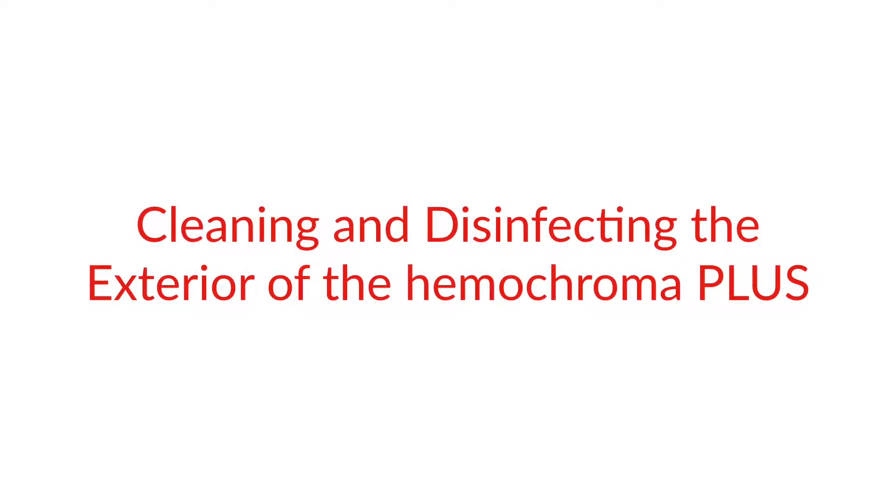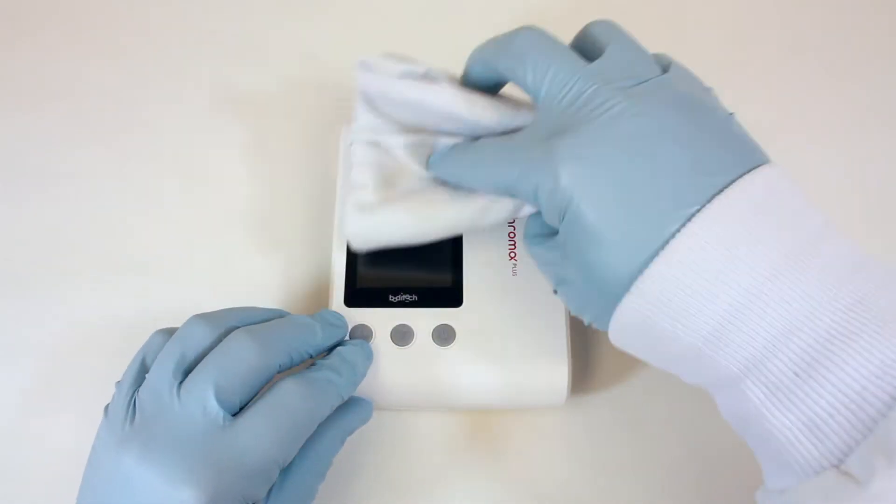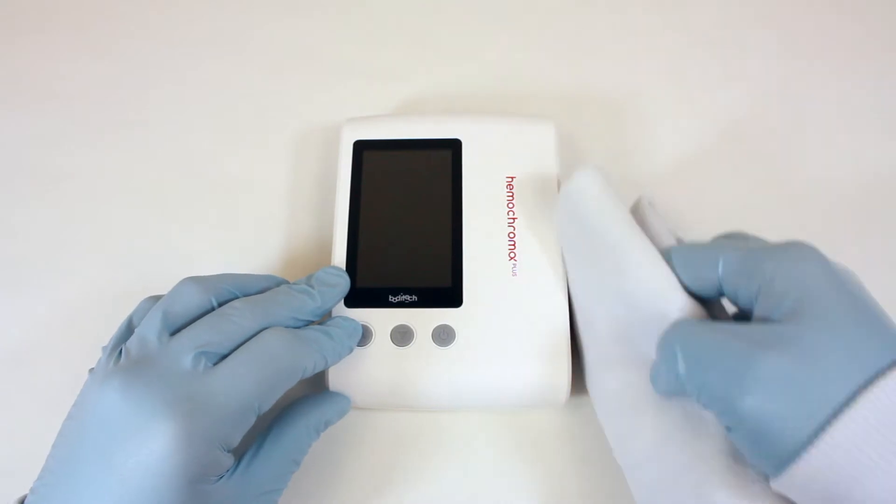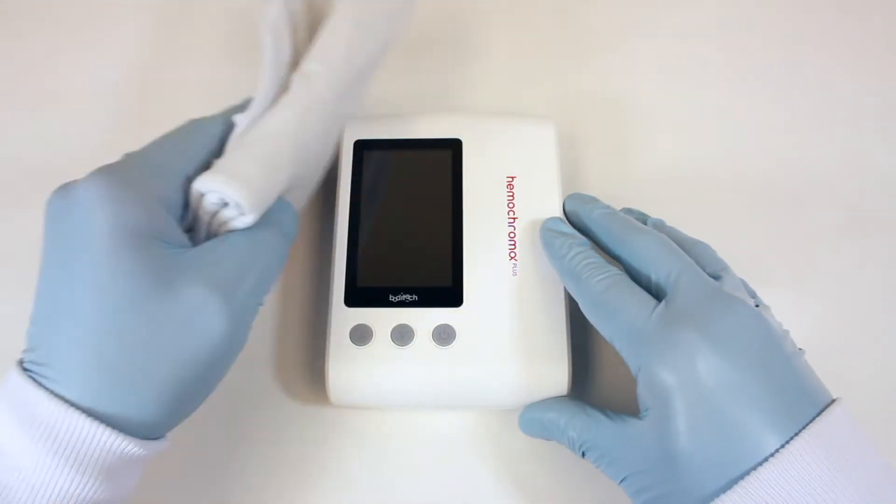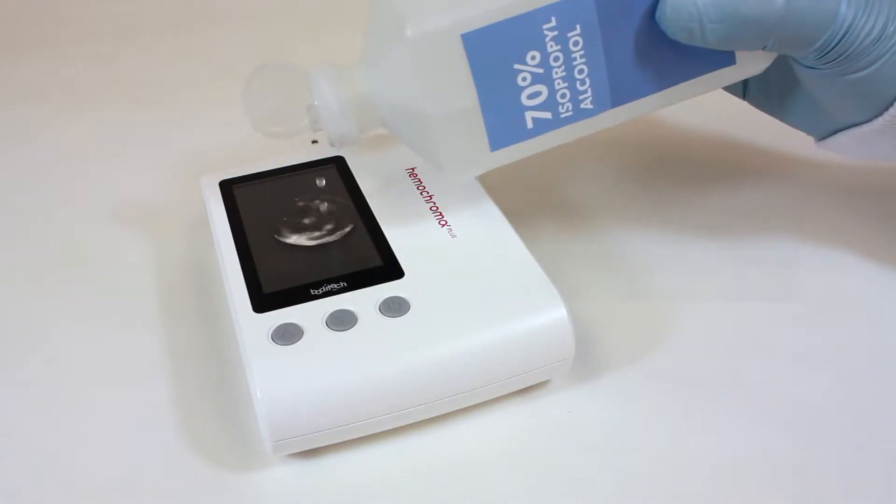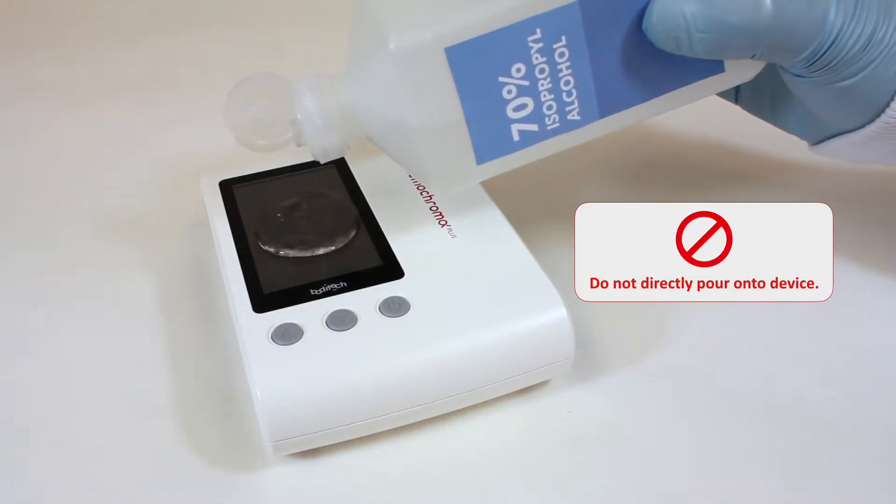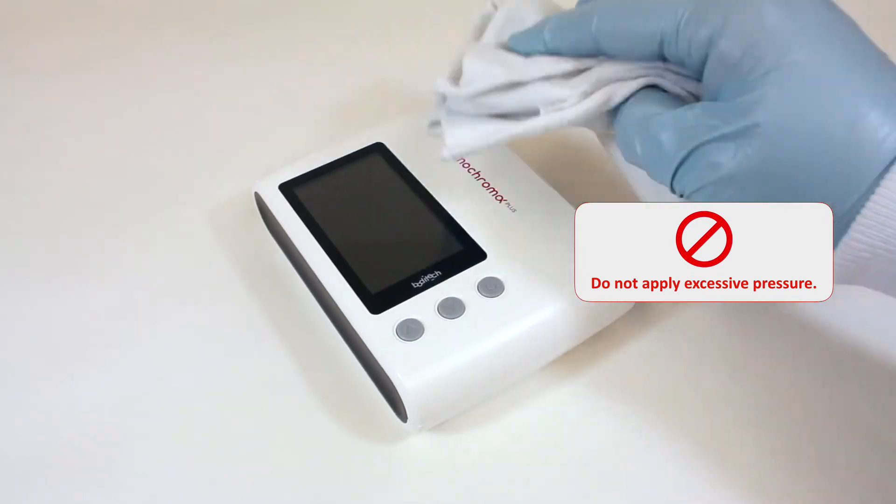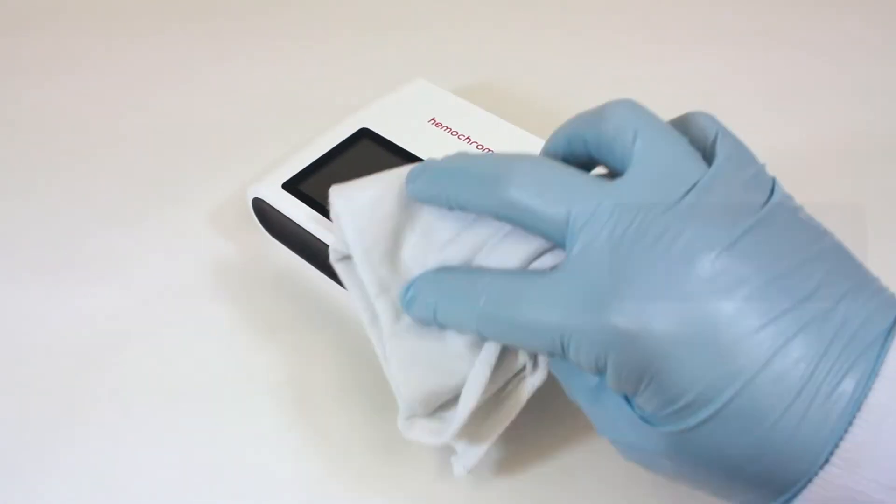Cleaning and disinfecting the exterior of the Hemochroma Plus Analyzer. Clean the exterior of the analyzer daily with a soft, clean cloth lightly dampened with mild detergent or 70% rubbing alcohol wipes. Do not directly pour detergent or rubbing alcohol on the device. Avoid applying excessive pressure when cleaning the surfaces.